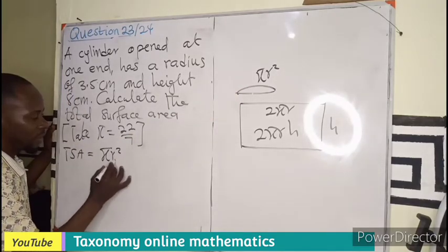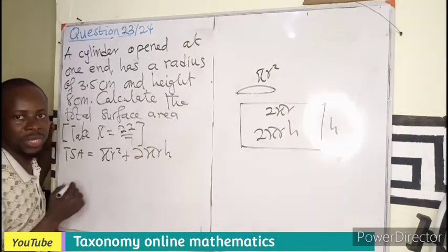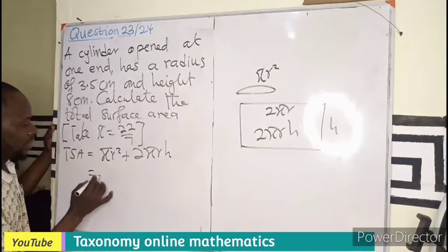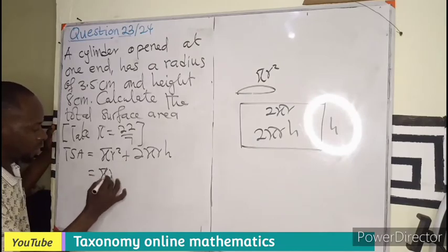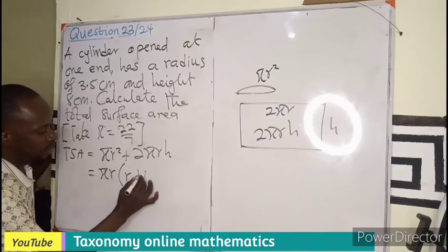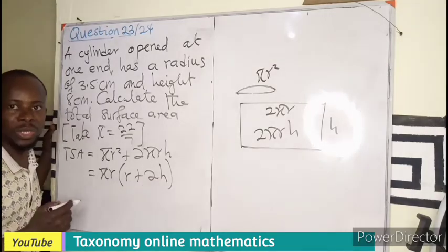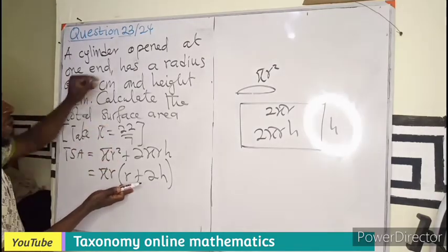Where we can factorize the pi out, pi r into bracket, r plus 2h. So now we can substitute the values we have in the question.